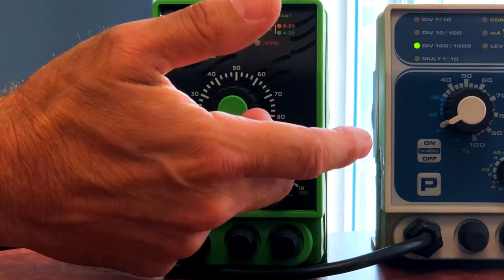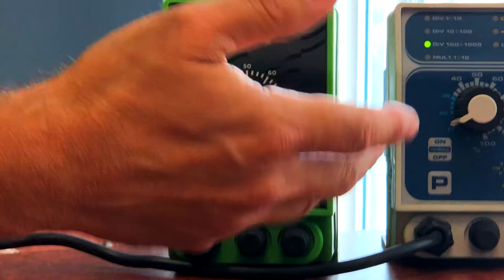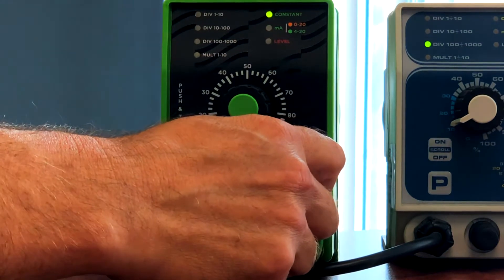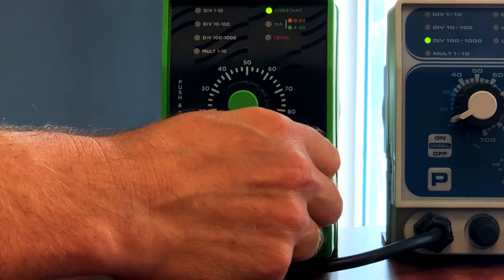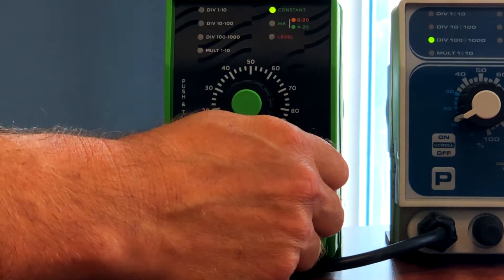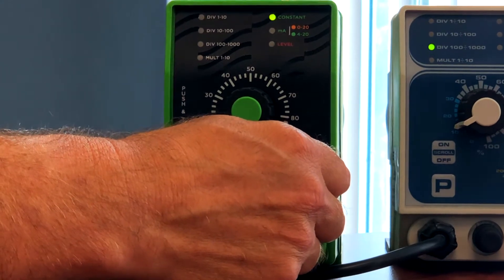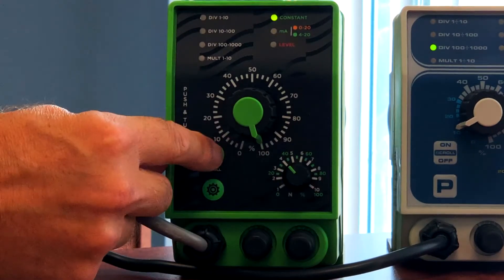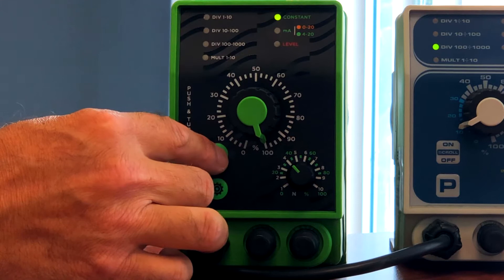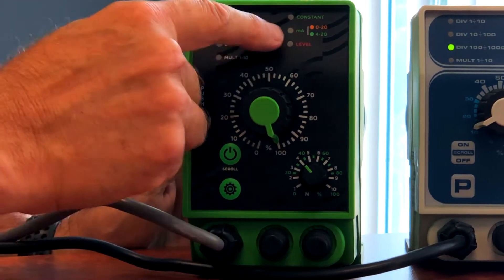So firstly, to prime the pump, the pump on the left-hand side is currently in constant mode, and if I turn the dial up, as you can hear, the pump is operating. If I want to prime the pump, I press the power button, which puts it into standby mode. You can see the LED is flashing.